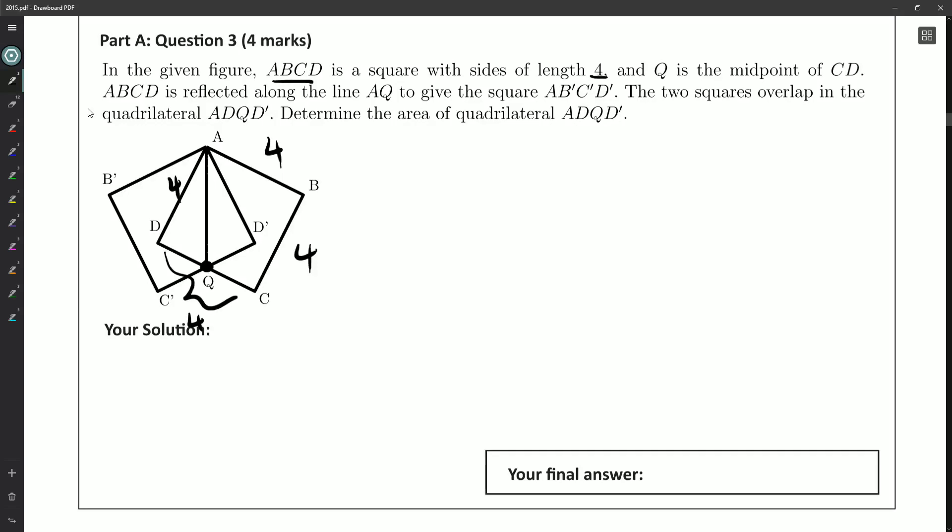Okay. ABCD is reflected along the line AQ to give a new square AB prime, C prime, D prime. The two squares overlap in quadrilateral A, D, Q, D prime.